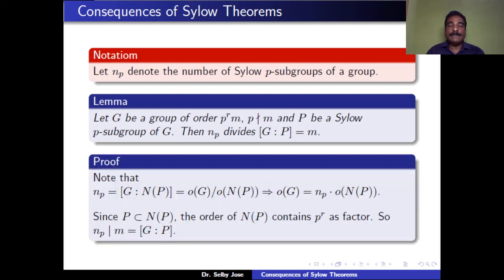Let us see the proof of this lemma. In the proof of Sylow theorem 2, we proved that if S is the set of all Sylow-P subgroups, then the cardinality of S equals the index of N(P) in G — that is, the normalizer of P in G, where P is a Sylow-P subgroup of G. So the cardinality of S is precisely the number of distinct Sylow-P subgroups of G. Therefore, NP equals the cardinality of S, which equals the index of the normalizer of P in G, which by definition equals the order of G divided by the order of N(P).